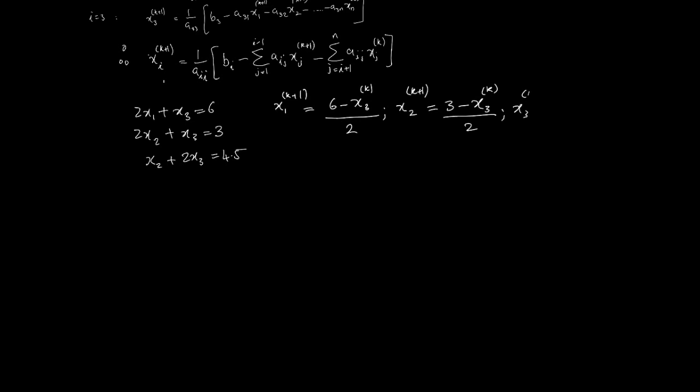Now the interesting thing happens when we get to x3. If you notice in x3, it's 4.5 minus x2. Now x2 is already calculated here. So therefore, we can easily say x2 k plus 1 here, and that's divided by 2. So the minor difference between this and the Jacobi would be that in the Jacobi, this is just x2 k instead of k plus 1. And that does make a lot of difference.